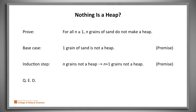A simple induction proof starting with a base case of one shows that no number of grains is enough to make a heap, but that's clearly false. One way to look at this paradox is that we have a logical problem. We started with premises that seemed reasonable, applied logical reasoning in a way that seemed right, yet we derived a conclusion that's wrong.